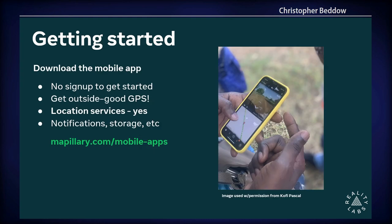The easiest way to get started with Mapillary is to download the mobile app. As of right now, there's no sign-up needed to get started — you can install the app, immediately walk outside, and start capturing images. It'll only ask you to sign in when you get to upload. It will ask for location services, notifications, and storage permissions. The most important thing is to make sure you go outside. Walk the streets and start mapping — that's the best way to get familiar with it.